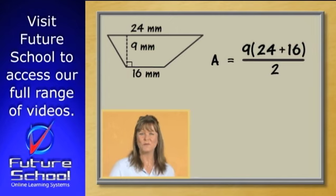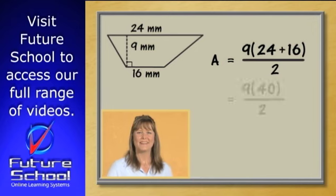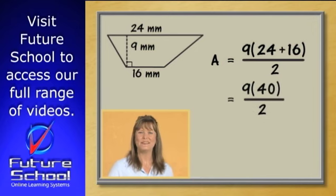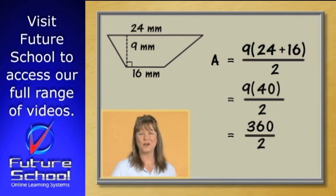24 plus 16 equals 40. So we now have 9 times 40 over 2, that's 360 over 2, which is 180.